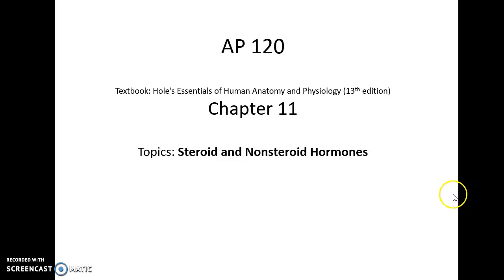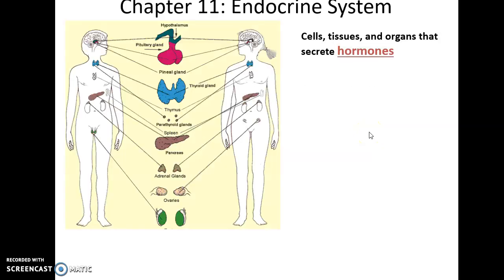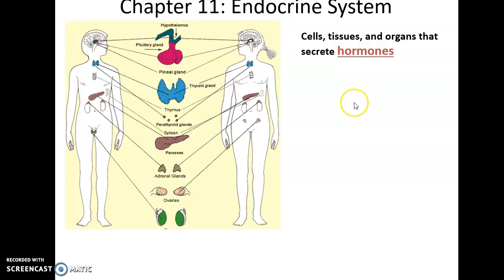AP 120, chapter 11, topic: steroid and non-steroid hormones. We are moving on to the endocrine system, and the thing that links all these very distinct and separate structures is the production of hormones. Cells, tissues, and organs that secrete hormones fall within the endocrine system.